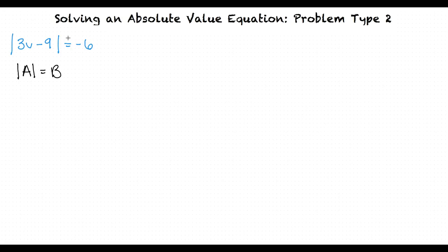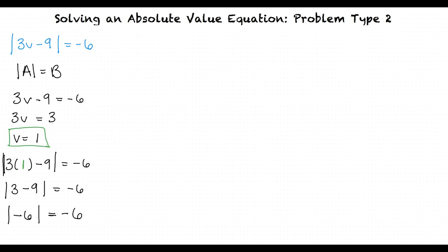However, let's work the equation out all the way just to double check. We're going to ignore the absolute value signs and solve for v. After solving, we get v = 1, which when plugged back into the initial equation gives us |−6| = −6. This is untrue since |−6| = 6, not negative 6. Therefore, this absolute value equation has no solution.